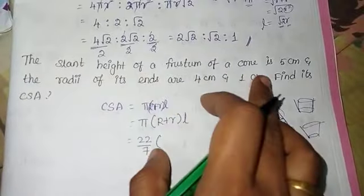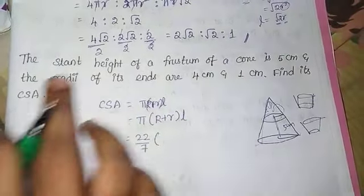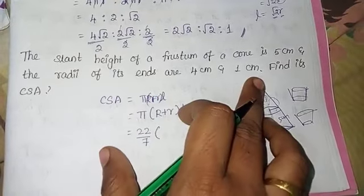Hello, the slant height of a frustum of a cone is 5cm and the radius of its ends are 4cm and 1cm.